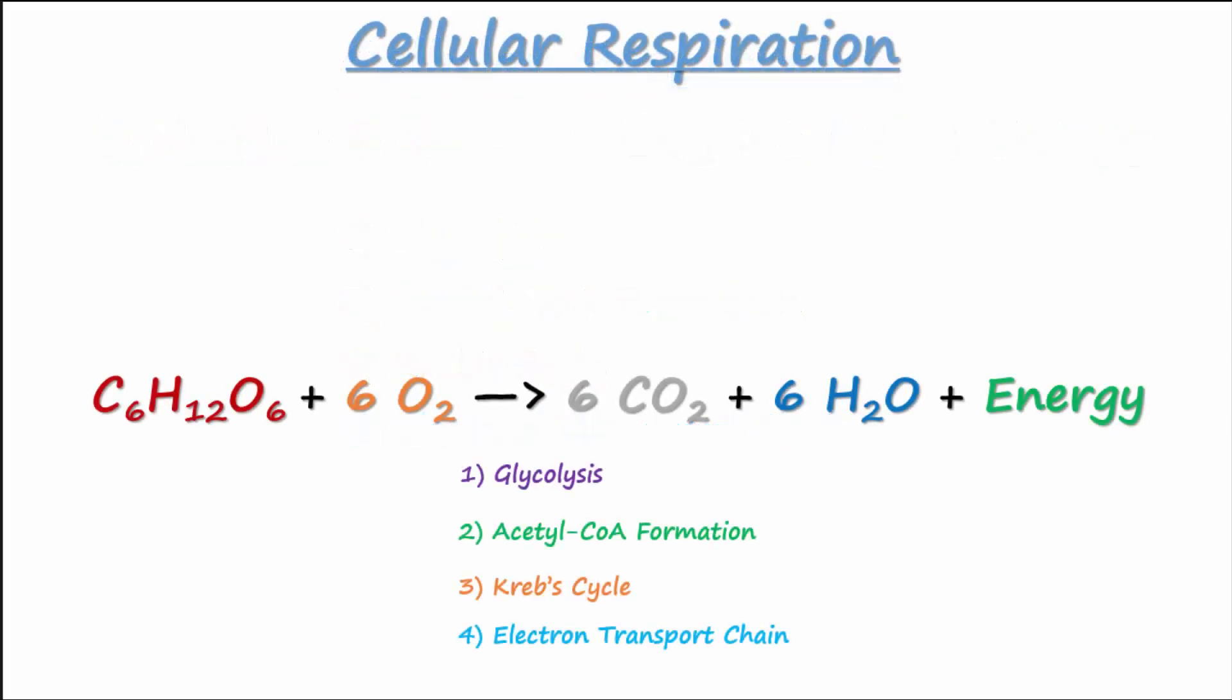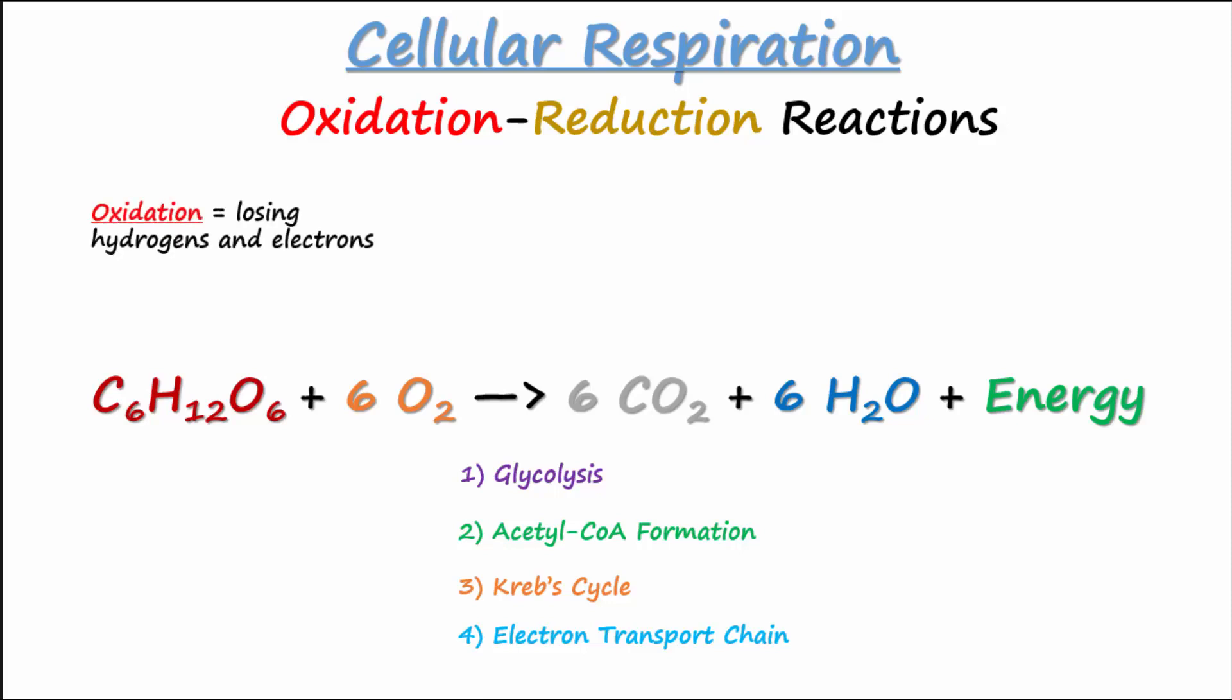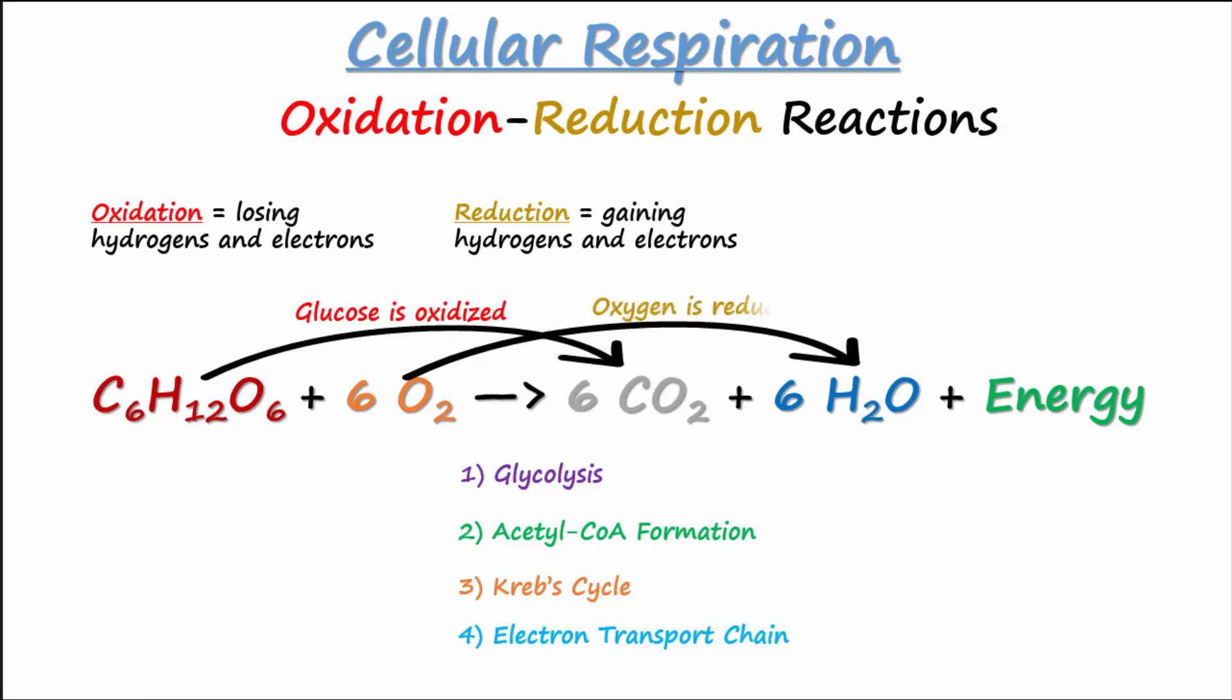The reactions of cellular respiration are known as oxidation-reduction reactions. Please know that oxidation means losing hydrogens and electrons, while reduction means gaining hydrogens and electrons. It looks like glucose is losing hydrogens and electrons as it eventually becomes carbon dioxide, so we would say glucose is oxidized. And the opposite is happening to the oxygen. As it becomes water, it is gaining hydrogens and electrons, so oxygen is reduced. You may use the acronym OILRIG to remember that oxidation is losing and reduction is gaining hydrogens and electrons.